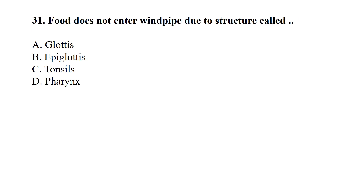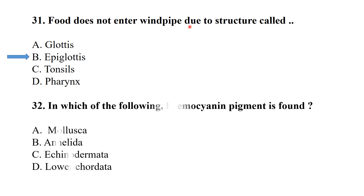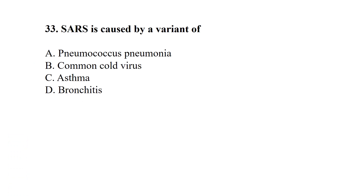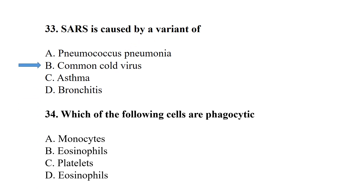In which of these animals does skin serve as an accessory organ of respiration? — Frog. Food does not enter the windpipe due to the structure called the epiglottis. In which of the following is hemocyanin pigment found? — Hemocyanin is mainly found in mollusks. SARS is caused by a variant of the common cold virus. Which of the following cells are phagocytic? — Mainly monocytes are phagocytic.